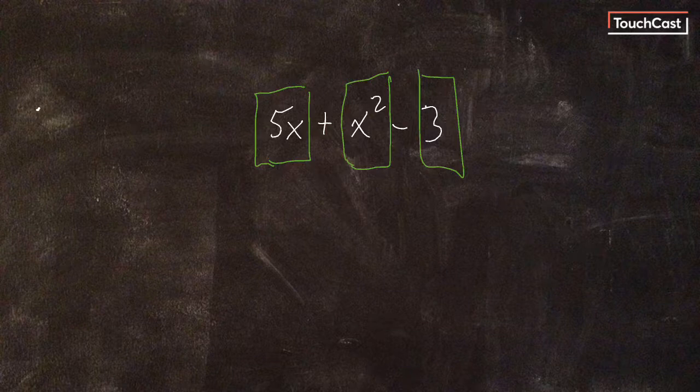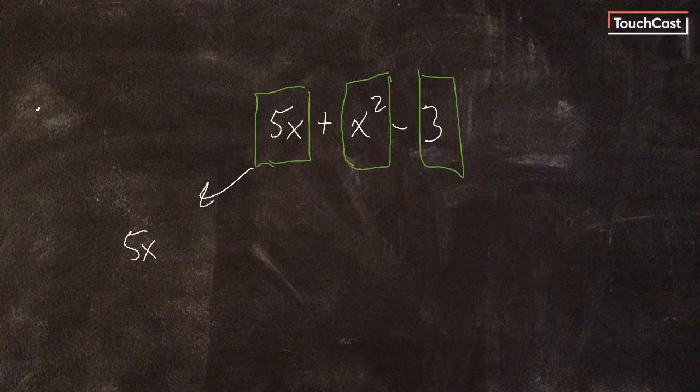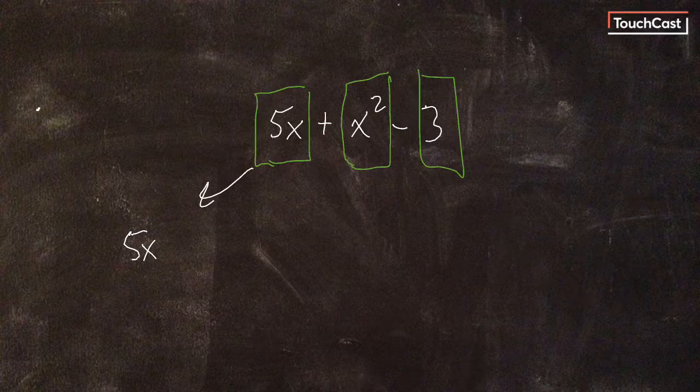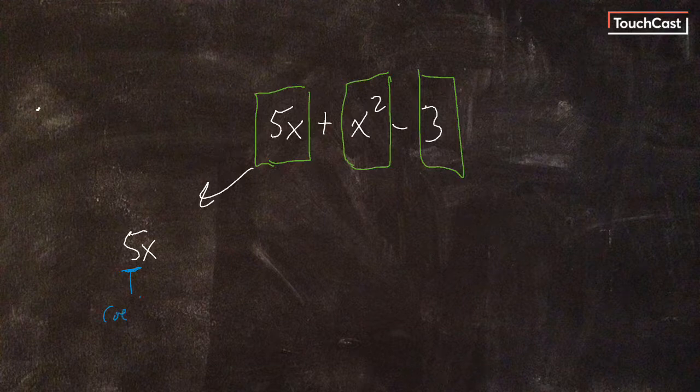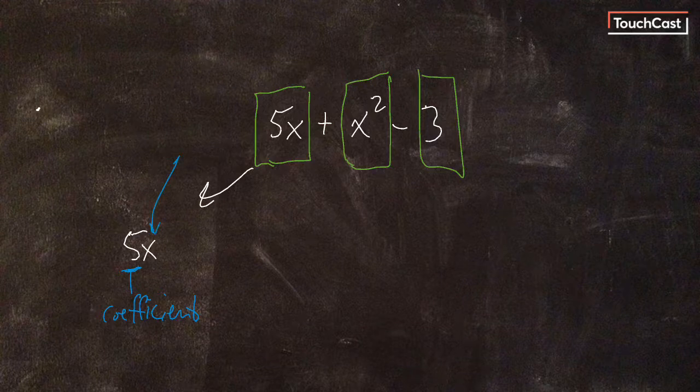Now, within each term, if I rewrite it, let's take 5x, we have pieces of the term. The 5 is the coefficient, and x is the variable.